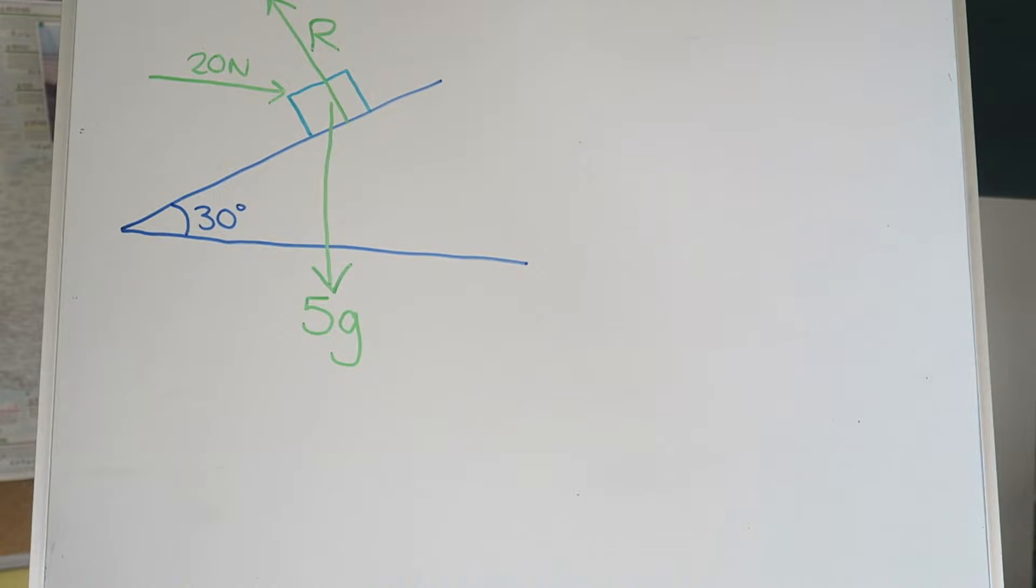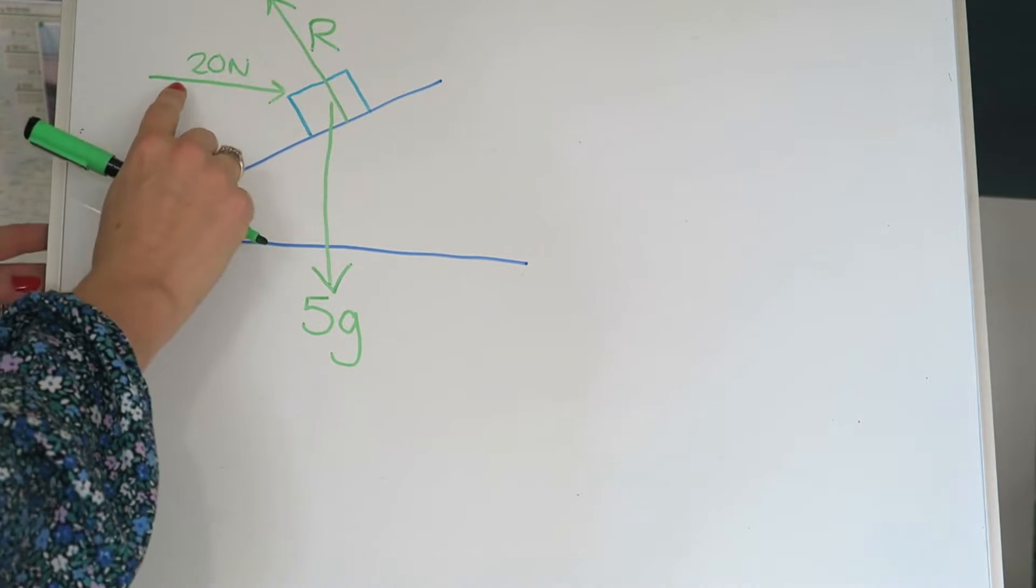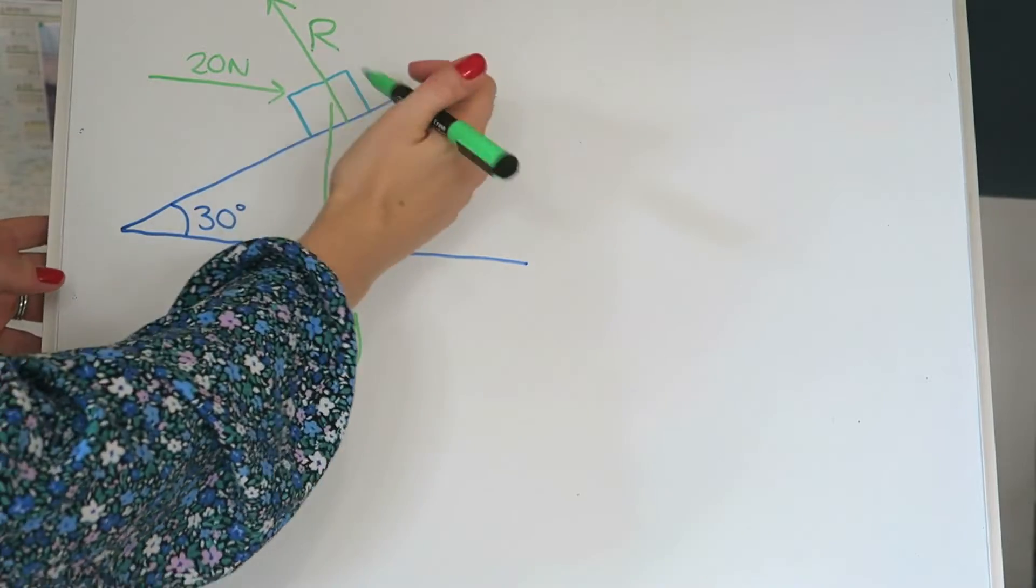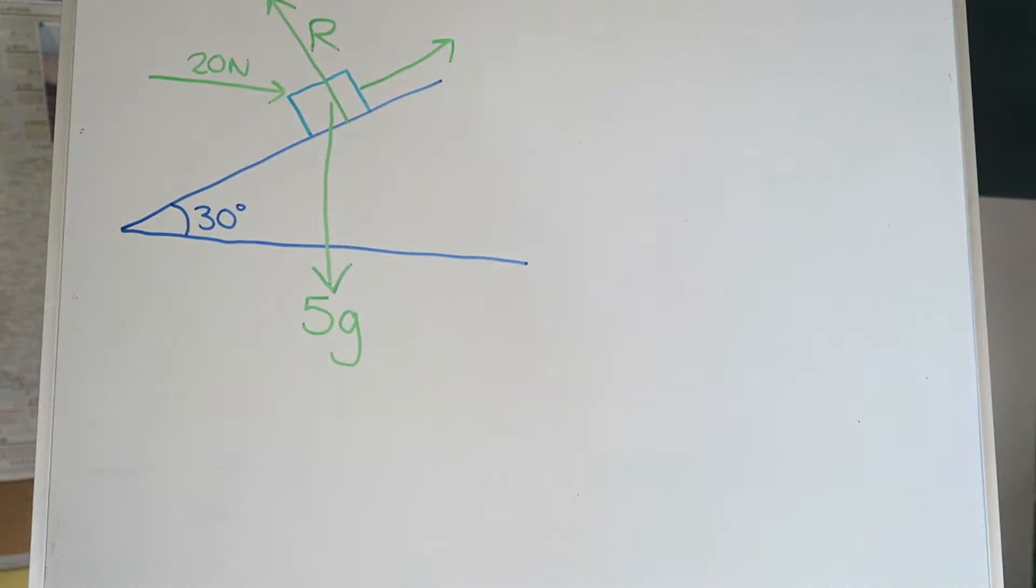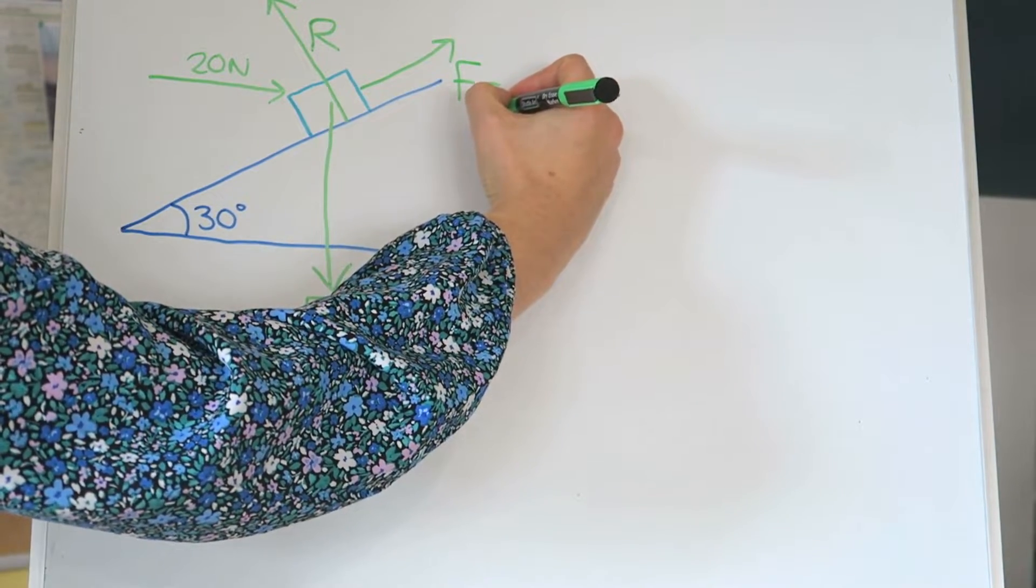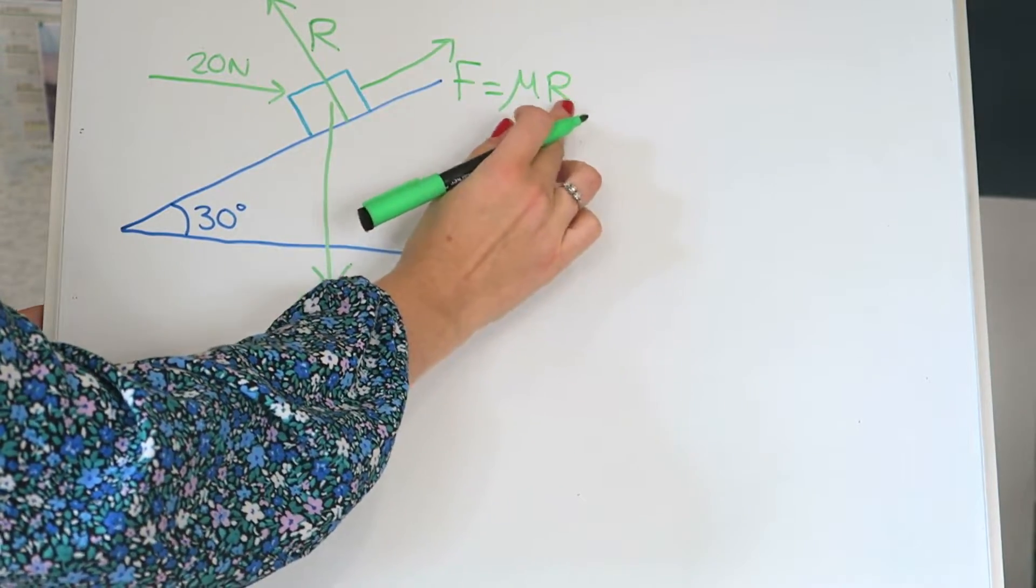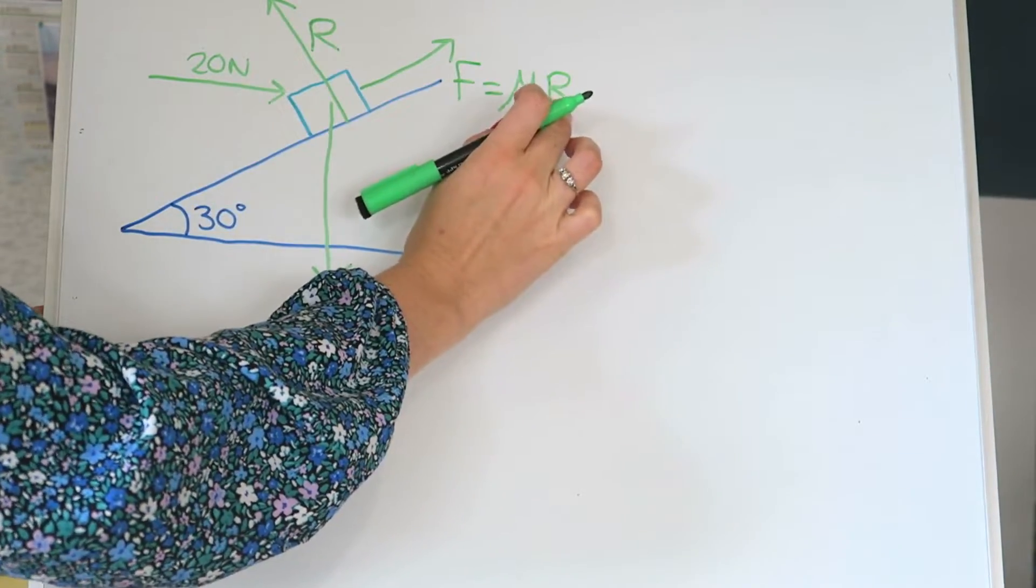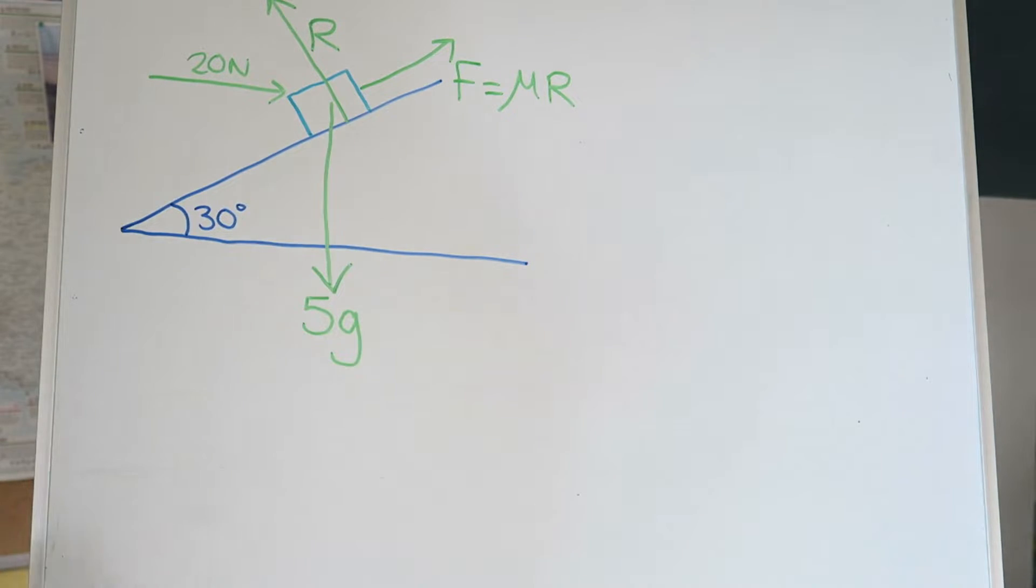And we've also got friction, which, as I said, is acting up the slope, and I want to do some other stuff here, so I'm going to just draw up here for now so it's out of the way. Now friction, as we know, is the same as the coefficient of friction times the reactive force, so mu times R, where R is the same as that guy there. So these are the two things that we're being asked to find actually. So we'll just leave those as letters for now.